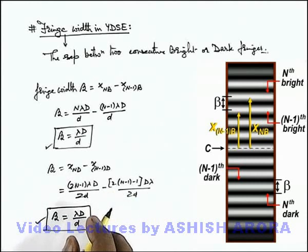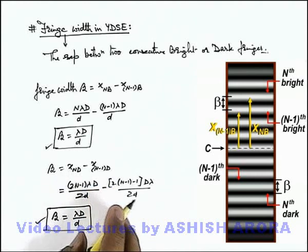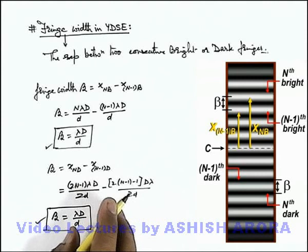That's why the fringe pattern is symmetric. And just on a look on interference pattern on screen, we cannot locate the central maxima just by having a look on the YDSE pattern. Only we can see: